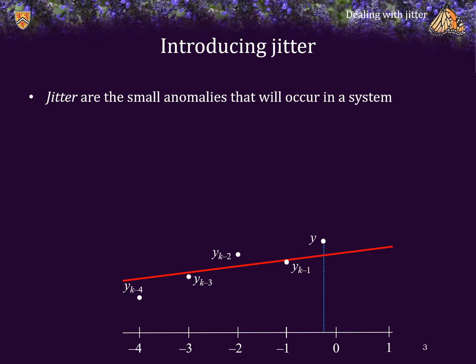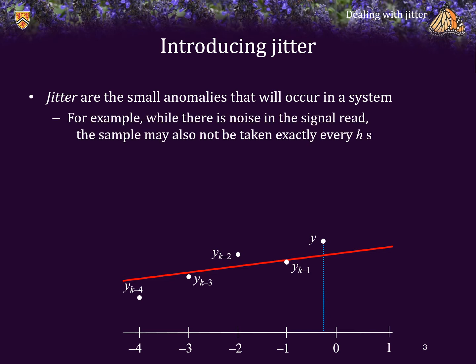Now within engineering, the term jitter is often used to describe small anomalies that occur regularly within a system. One example of jitter is we're reading a sensor and we know that the sensors result is going to be noisy. However, also the reading may not be taken exactly every h units of time, say every h seconds.